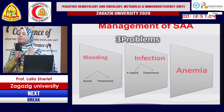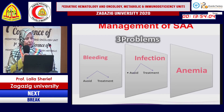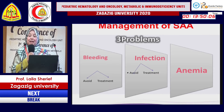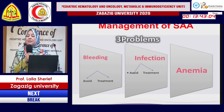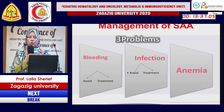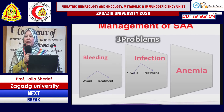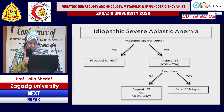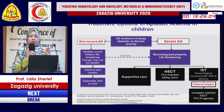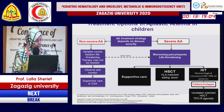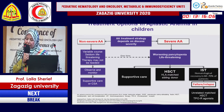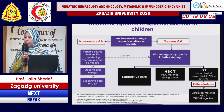Management of aplastic anemia addresses three problems. For thrombocytopenia and bleeding, transfusion is given, and patients must avoid intramuscular injections and drugs affecting platelet number and function. For infection from neutropenia, isolation and neutropenic care are essential. For anemia, transfusion is used. In non-severe aplastic anemia, supportive care is given; if the patient deteriorates, it is treated as severe aplastic anemia.